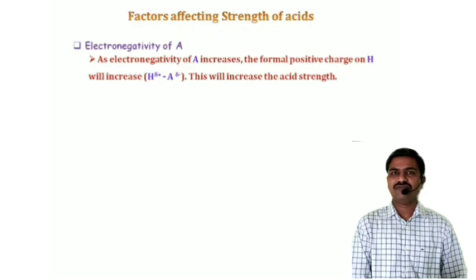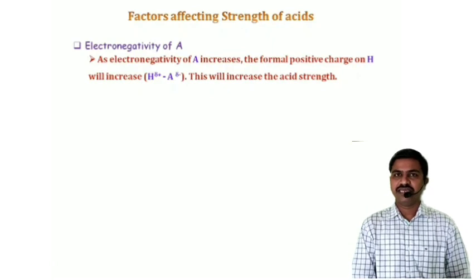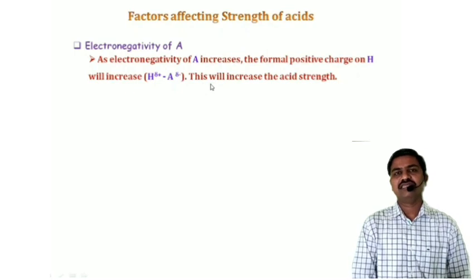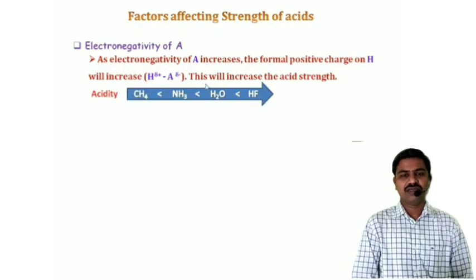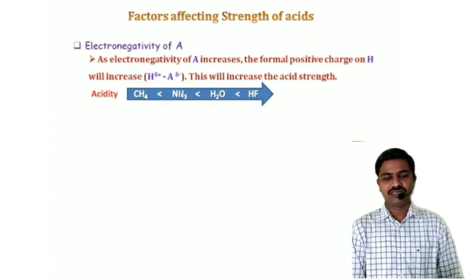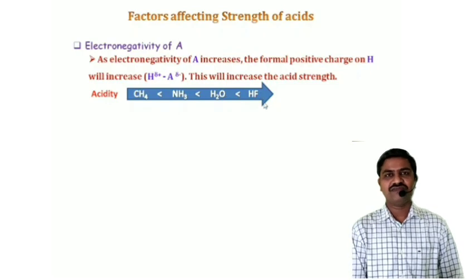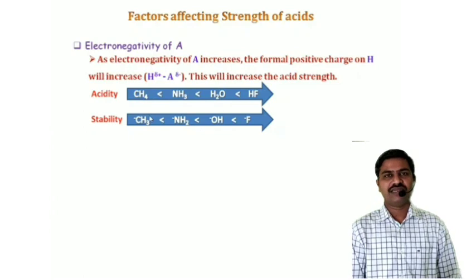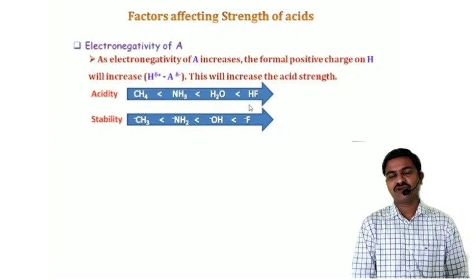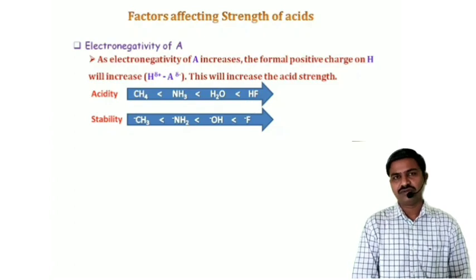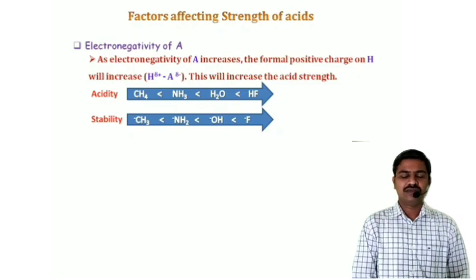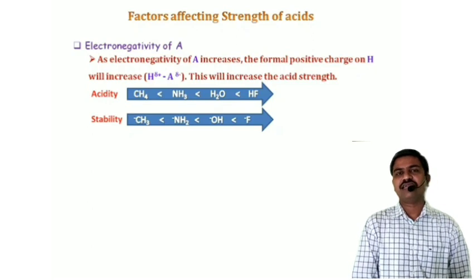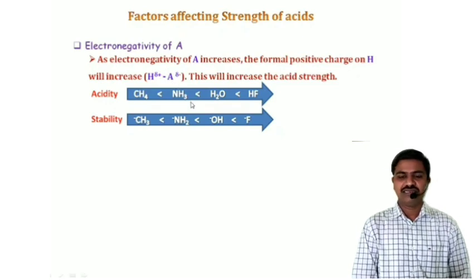The second factor is electronegativity of A. As the electronegativity of A increases, the formal positive charge on the hydrogen atom increases, which increases the acid strength. For example, the increasing acidity order is CH₄ < NH₃ < H₂O < HF. Fluorine is the most electronegative element, so HF is the strongest acid in this series. As electronegativity of A increases, the formal positive charge on hydrogen increases and acid strength increases.